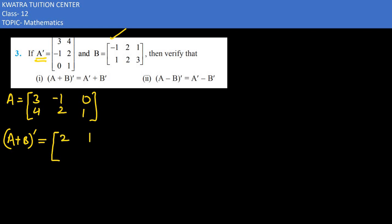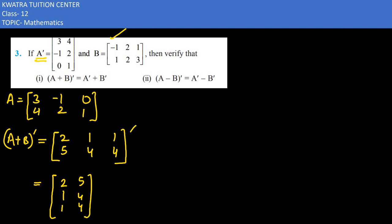Now we compute A+B: 3 minus 1 is 2, minus 1 plus 2 is 1, 1 plus 1 is 1, 4 plus 1 is 5, 2 plus 2 is 4, 1 plus 3 is 4. Ab iska transpose lete hain — transpose hoga: 2, 1, 1 in the first row and 5, 4, 4 in the second row. So our left side is complete.